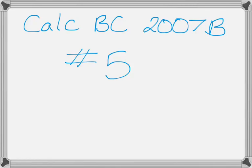I'm going to go over question number 5 from the BC Calculus Exam 2007, Form B. It's a differential equation slash Euler's Method problem.